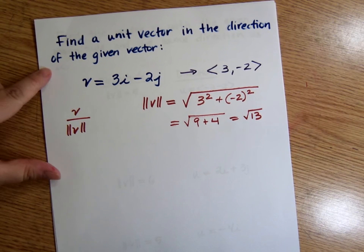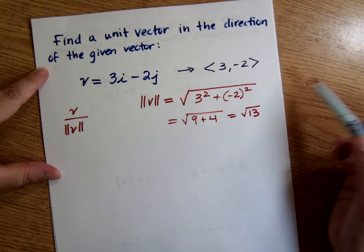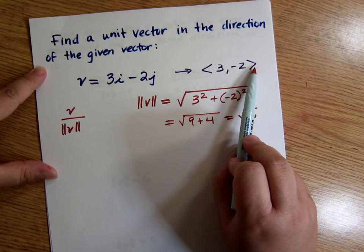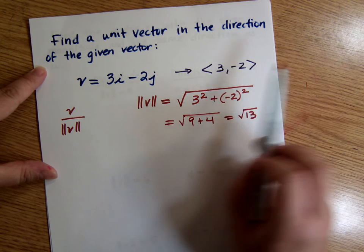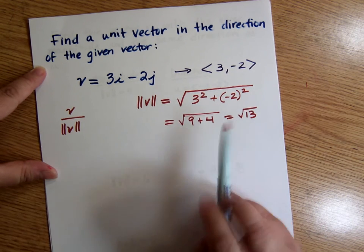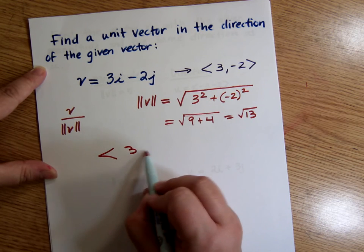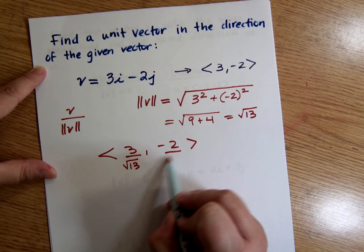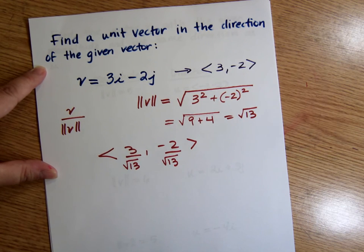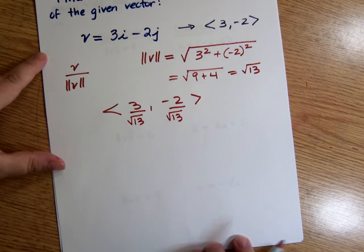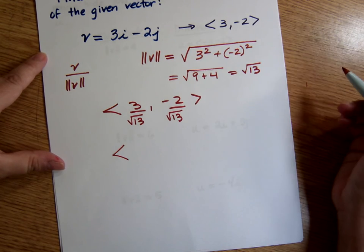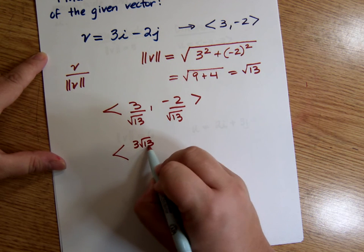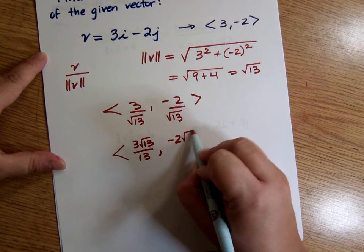All right, so if I want to write this as a unit vector, or give you the unit vector that is in this direction, I take this and I divide it by this. So in other words, I'm just writing same components over square root of 13. The only thing is we're not allowed to leave radicals in the denominator like that, so we have to rationalize. So that means multiplying on top and bottom by square root of 13, which gives me this and this.